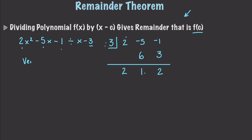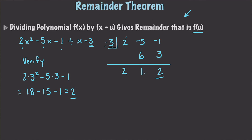Let's verify that result. If we take 2 times 3 squared minus 5 times 3 minus 1, that equals 18 minus 15 minus 1, which equals 2. So plugging in 3 and using synthetic division both give us a final value of 2 — it's all verified. The remainder theorem is confirmed.